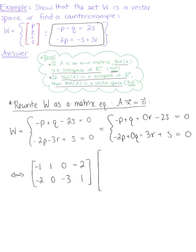And this is multiplied by that vector PQRS, and this is equal to the 0 vector in R^2. So we end up with matrix A times some vector X equals the 0 vector.